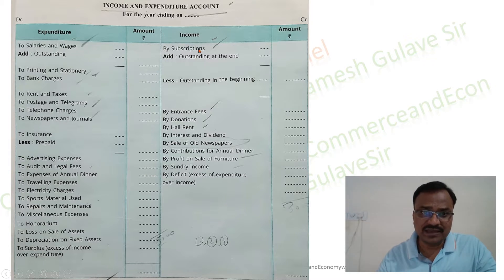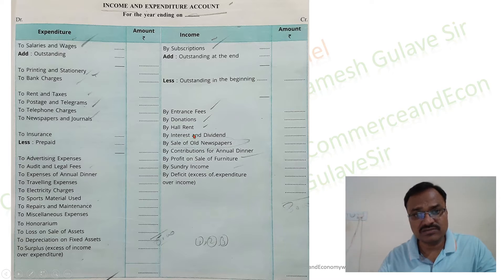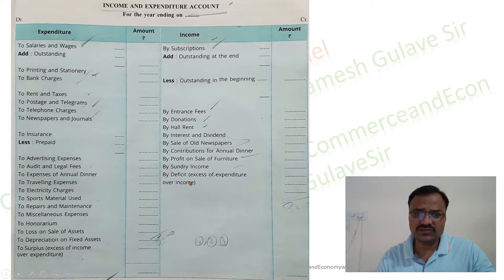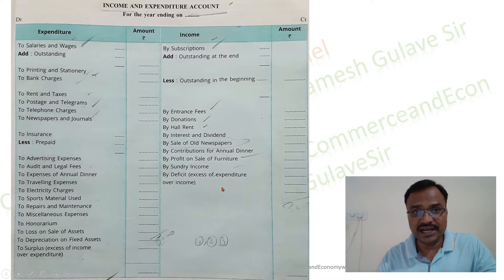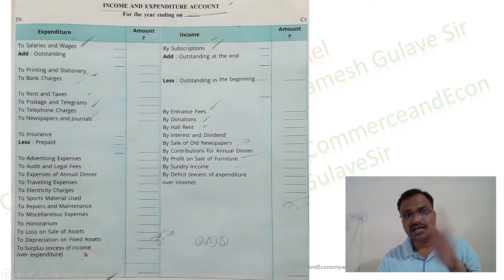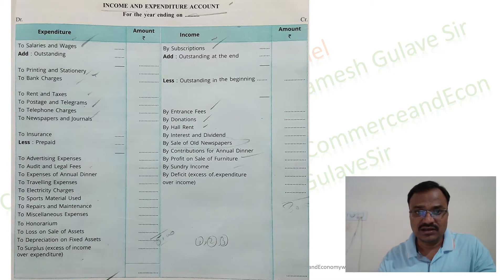This account is closed at the end of the year. If incomes are more than expenditure there will be a surplus — equivalent to net profit in a profit and loss account. If expenditure is more than income there will be a deficit — equivalent to net loss. At the end of the year, the surplus is transferred to the balance sheet and added to the capital fund; if there is a deficit it is subtracted from the capital fund.